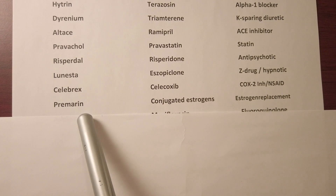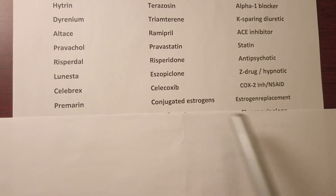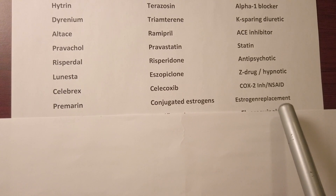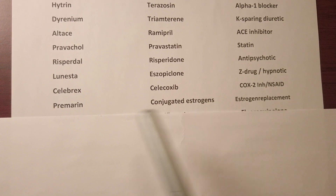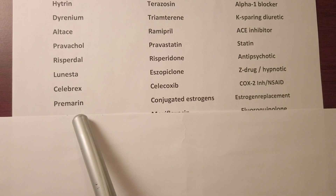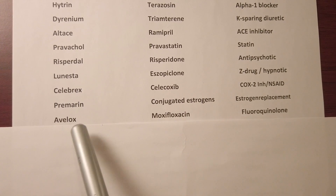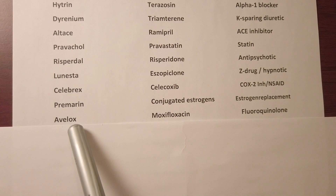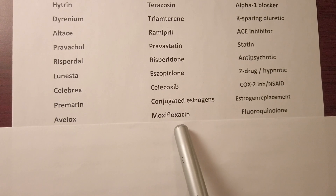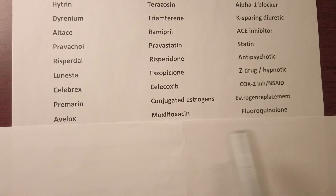We have Celebrex, generic name celecoxib. It's a COX-2 inhibitor or NSAID. We have Premarin, which is a conjugated estrogen used for estrogen replacement, usually in menopausal women. We have Avelox, generic name moxifloxacin, and it's a fluoroquinolone antibiotic.